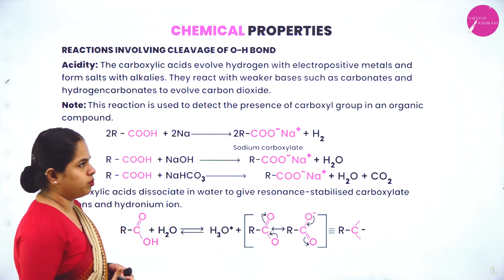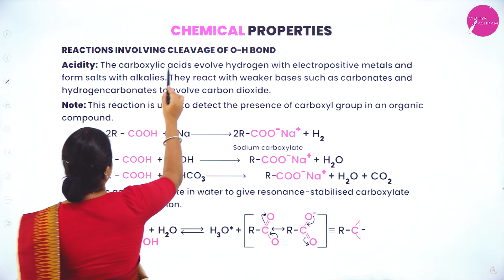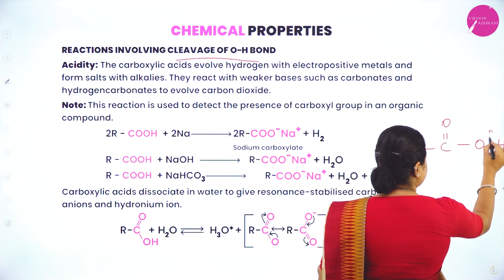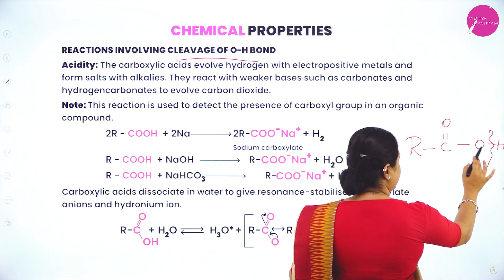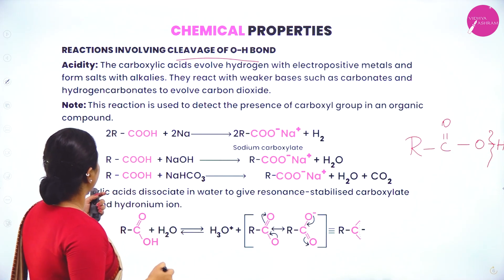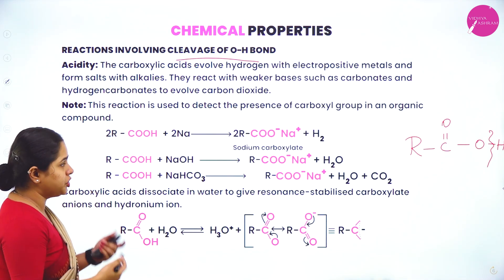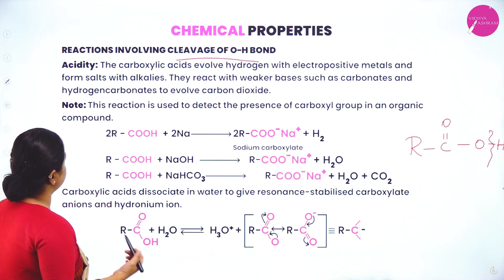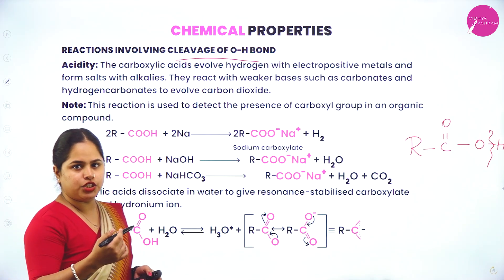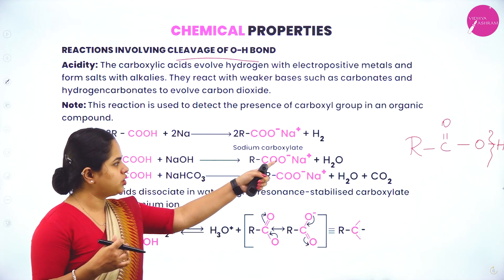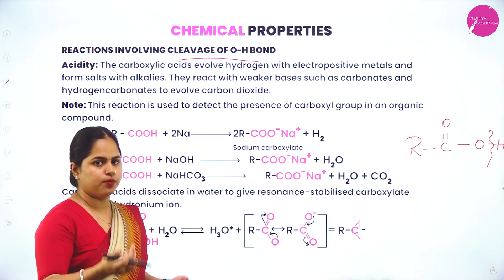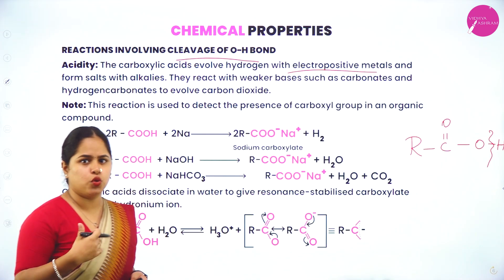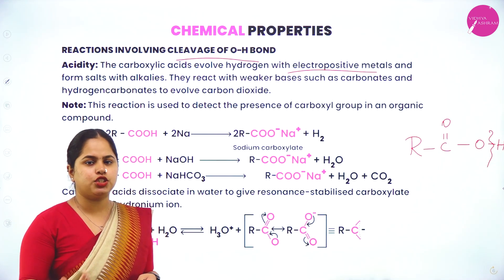Moving on to the chemical properties of carboxylic acid. First we study reactions involving the cleavage of the oxygen-hydrogen bond. Carboxylic acids evolve hydrogen with electropositive metals and form salts with alkalis. They react with weaker bases such as carbonates and hydrogen carbonates to evolve carbon dioxide. Because of this acidic nature, H⁺ is released when the O-H bond breaks. When reacting with highly electropositive metals like sodium or potassium, hydrogen gas H₂ is evolved.